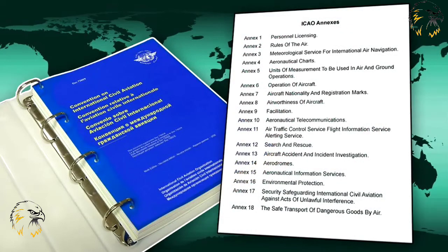The 18 annexes to the Convention contain the standards and recommended practices, and were established after the initial consultation with the contracting states. The standards are considered binding on the contracting states. However, if a state wishes to opt out of any particular standard, it may do so, as long as it informs ICAO, who in turn will publish the non-adherence as a difference. This difference must also be published by the opt-out state in its own Aeronautical Information Publication, or AIP.